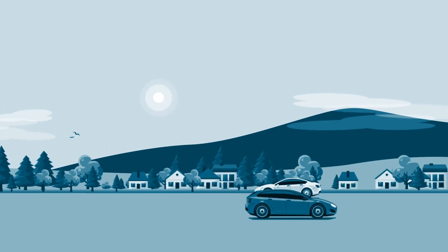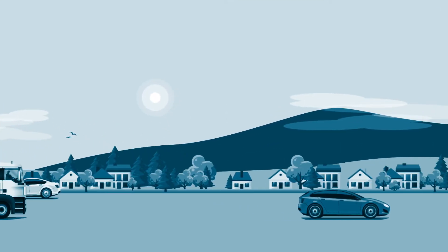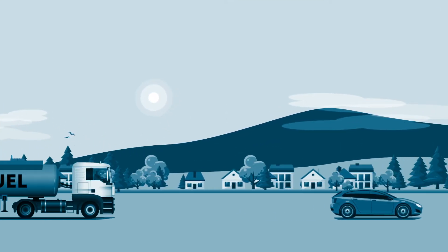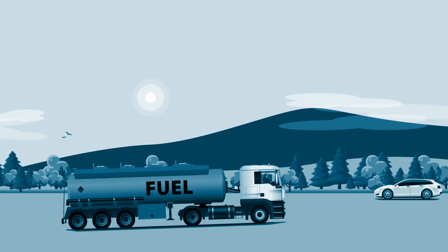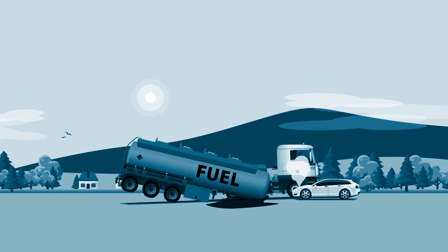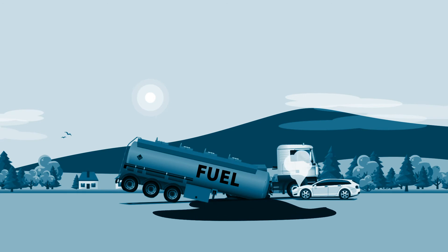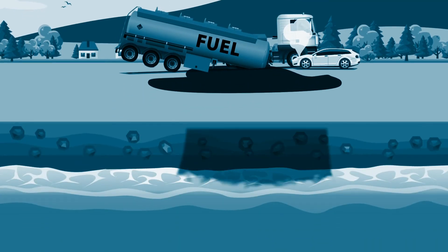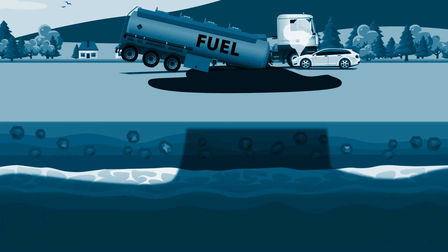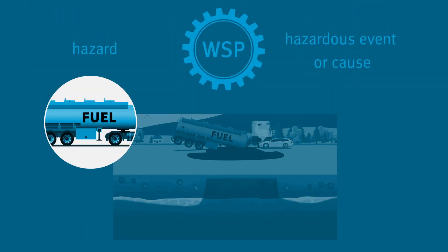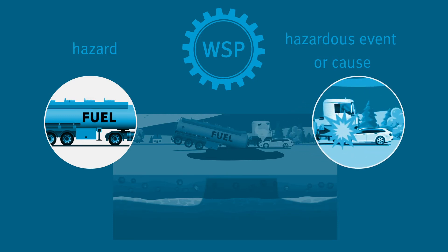So if a road runs through a catchment area, this is not automatically a problem for the drinking water supply. However, if a truck carrying fuel has an accident on the road and the load seeps into the ground contaminating the groundwater supply, we speak of a hazard — the fuel — and the hazardous event — the accident.